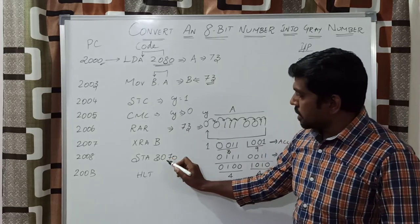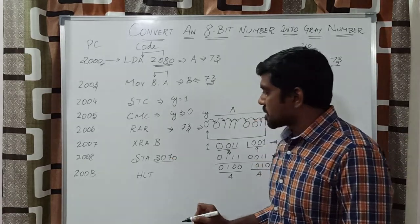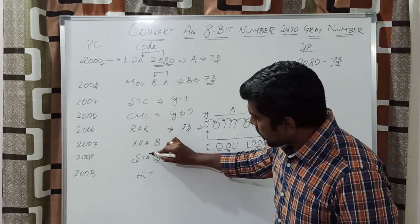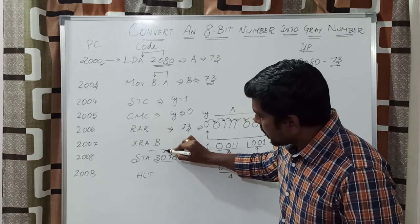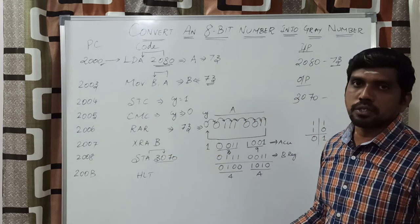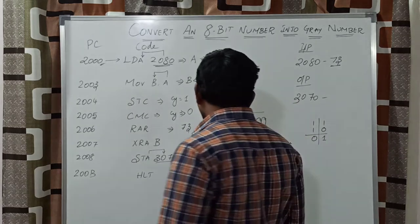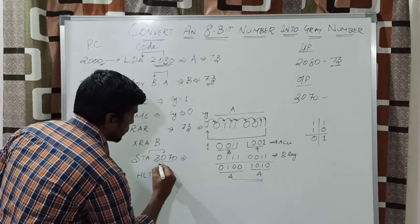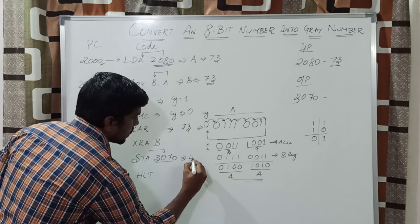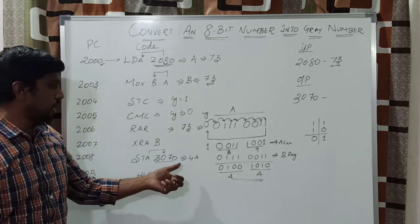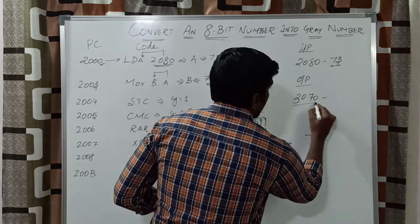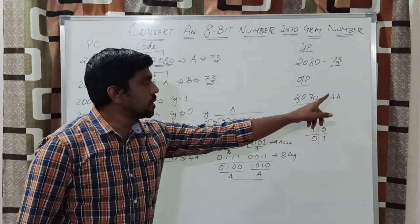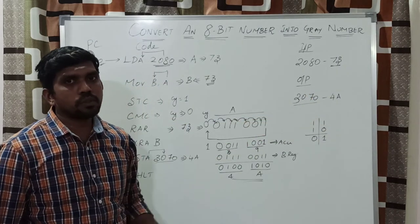Instruction STA 3070H. This 3070H is a 16-bit memory location. After execution of this instruction, whatever value is present in the accumulator, the content is moved to the specified memory location 3070H. The accumulator content is 4A, and after execution, memory location 3070H stores the content 4A. The output of the program is 4A, and this 8-bit value is stored in memory location 3070H.